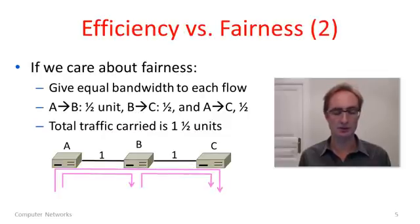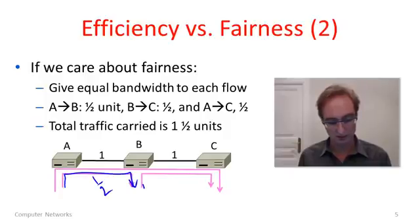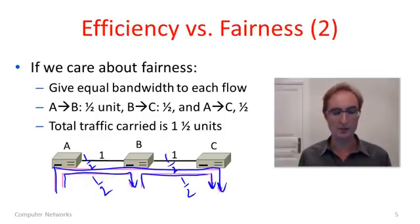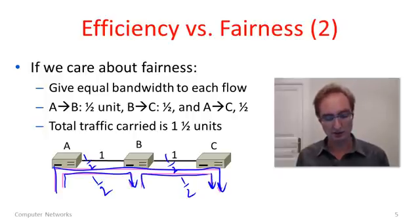Suppose we care about fairness. We could simply give all of these flows an equal amount of bandwidth. The best we can do is assign a half unit to all of the different flows: a half to A-B, a half to B-C, and a half to A-C. The flow A-C goes through B, so we'll have half a unit across each of these links. When we sum it with the other flows, we get up to the total of one. So we've used all of the capacity on both links. Everyone's got the same amount of flow. In this case, the total amount of traffic the network carries is one and a half units.